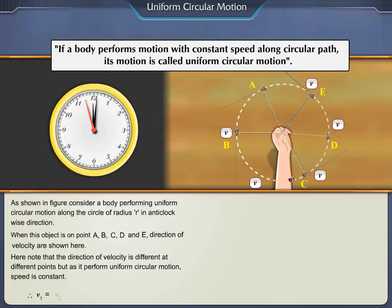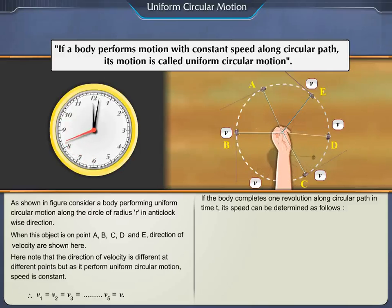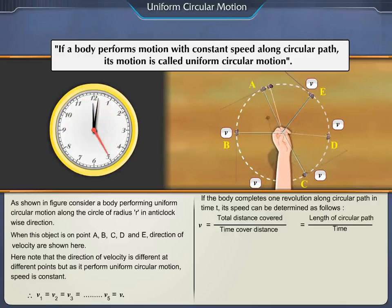Therefore, V1 is equal to V2 is equal to V3 is equal to V. If the body completes one revolution along circular path in time T, its speed can be determined as follows. V is equal to total distance covered upon time to cover distance is equal to length of the circular path upon time is equal to circumference upon time. V is equal to 2 pi R upon T.